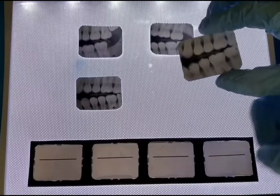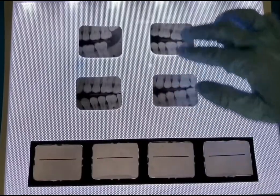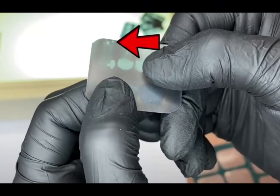Place the embossed identification dot the same way for all films. As mentioned before, make sure the embossed dot is convex.